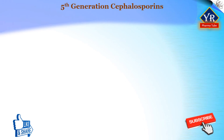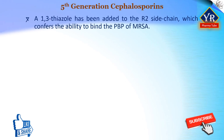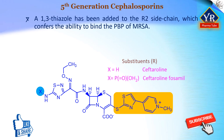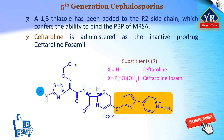The last type are fifth-generation cephalosporins. A 1,3-thiazole ring has been added to the R2 side chain of the cephalosporins, which confers the ability to bind to the penicillin-binding protein of methicillin-resistant Staphylococcus aureus, abbreviated MRSA. As a result, ceftaroline, an example of a fifth-generation cephalosporin, has excellent extended activity against various strains of MRSA and multi-drug-resistant Streptococcus pneumoniae, abbreviated MDRSP. This agent is administered as the inactive prodrug ceftaroline fosamil, which is rapidly converted to ceftaroline.